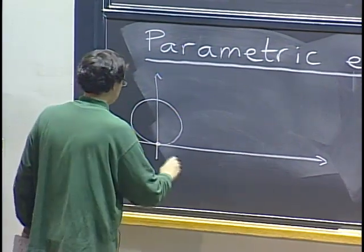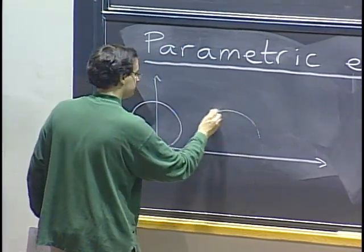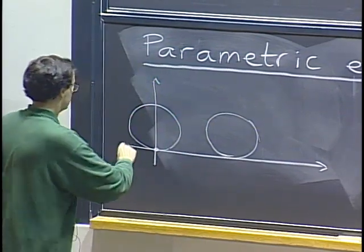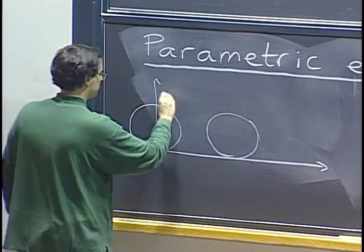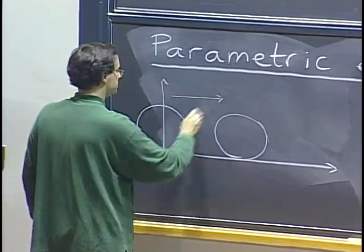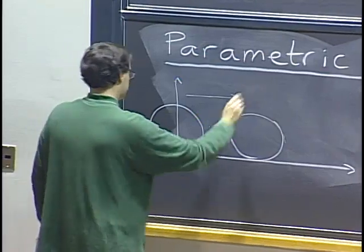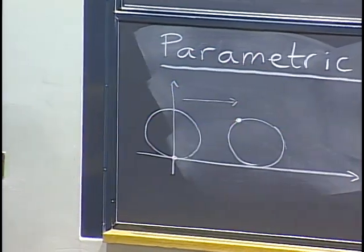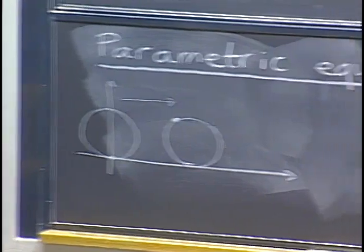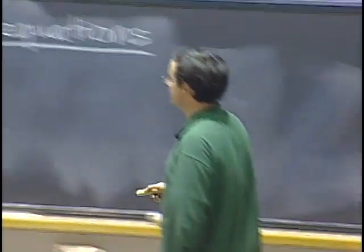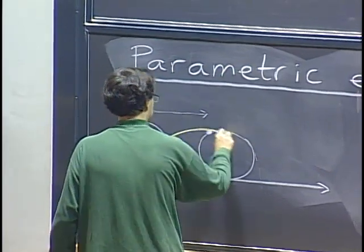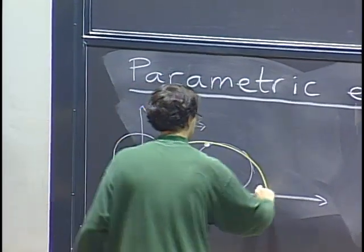We have this example where we have a wheel rolling on the x-axis and a point on the wheel. As it moves around, it traces a trajectory that looked more or less like this.